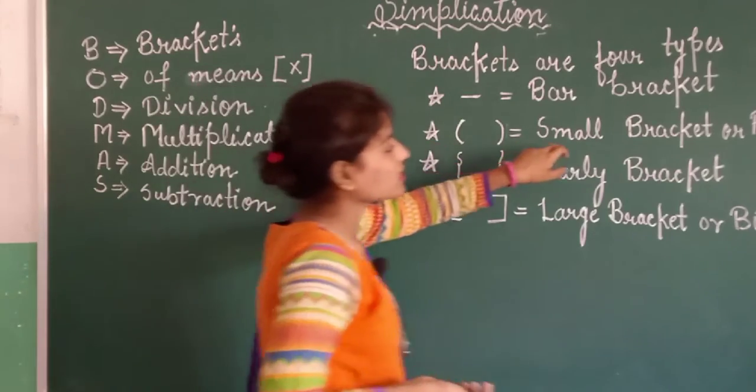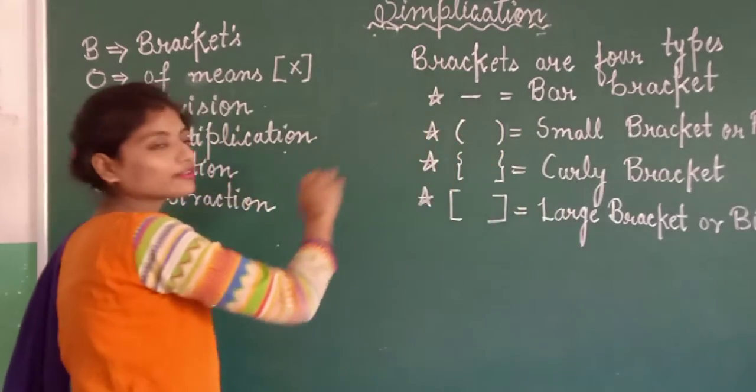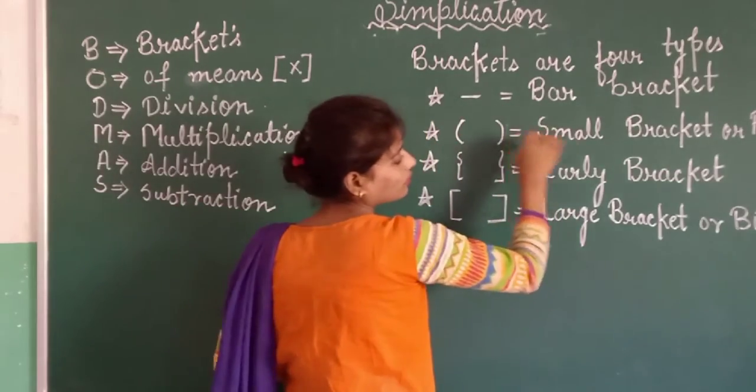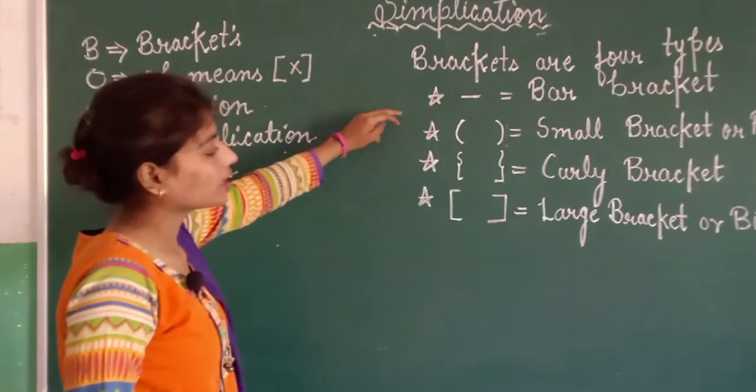Now next bracket is small bracket or round bracket. Joh uske baad, jab aap bar bracket ko solve karenge, so next kya hoga - small bracket or round bracket. Phir aap small bracket ya round bracket ko solve karenge.